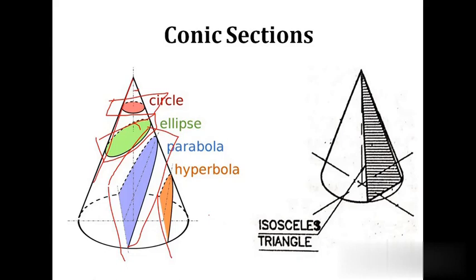The last and fifth case is isosceles triangle. To get an isosceles triangle, the section plane should pass through the apex of the cone and it should cut the base also. An isosceles triangle is the section obtained by cutting a right circular cone by a section plane that passes through the apex of the cone and intersects the base of the cone. In the true shape you will be getting an isosceles triangle.